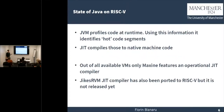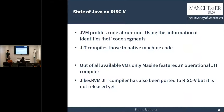Why is JIT compilation important for Java? When you start running a Java program, the JVM profiles the code at runtime, and using this information it identifies hot code segments. Then it JIT compiles those to native machine code, so it doesn't interpret the bytecode. This provides great speedups for the JVM. Without JIT compilation, you have really low performance. Out of all available VMs, only MaxineVM features an operational JIT compiler at the moment.